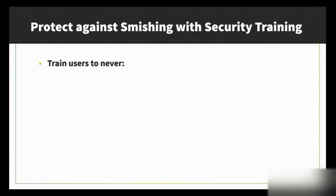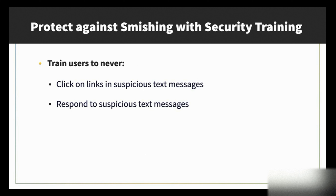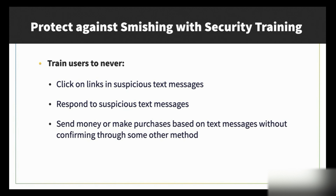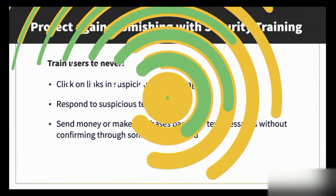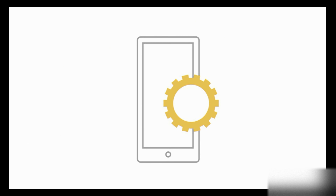For smishing, the best protection is also security training. Train users to spot suspicious text messages and never click links in them, respond to suspicious texts, or send money based on text messages without confirming through another method like a direct phone call. Repeated unwanted texts from the same number can be blocked in iPhone and Android settings. Also check if your smartphone has options to filter or block texts from unknown senders.